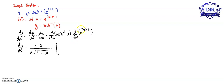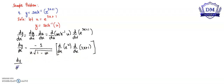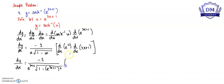Using chain rule again on this part, we have d over du of e raised to u multiplied by d over dx of 3x plus 1. So dy over dx is equal to negative 1 all over u — which is e raised to 3x plus 1 — multiplied by the square root of 1 minus the quantity of e raised to 3x plus 1 squared, then multiplied by e raised to u, then multiplied by the derivative of 3x plus 1, which is 3.